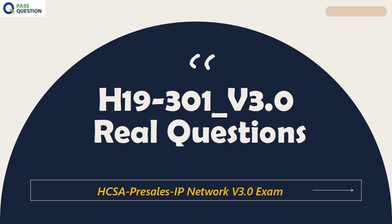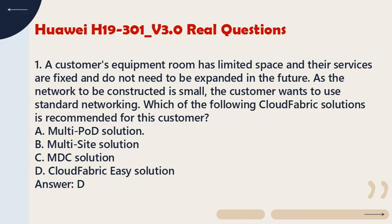Share H19301_V3.0 real questions to prepare for the HCSA Pre-Sales IP Network V3.0 exam. Question 1: A customer's equipment room has limited space, their services are fixed and do not need to be expanded in the future. As the network to be constructed is small, the customer wants to use standard networking. Which of the following cloud fabric solutions is recommended for this customer?